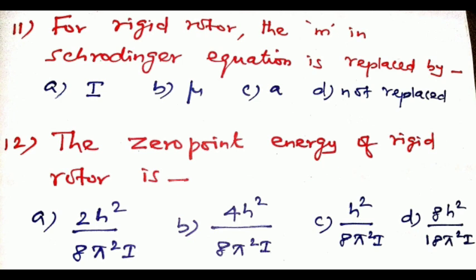Question number twelve: the zero point energy of a rigid rotor is dash. The energy of a rigid rotor is n²h²/8π²I. For zero point energy, we set n = 0. Since n² = 0, the zero point energy is zero. Wait — actually for n=1: h²/8π²I. The zero point energy corresponds to option c: h²/8π²I, so option c is the correct answer.